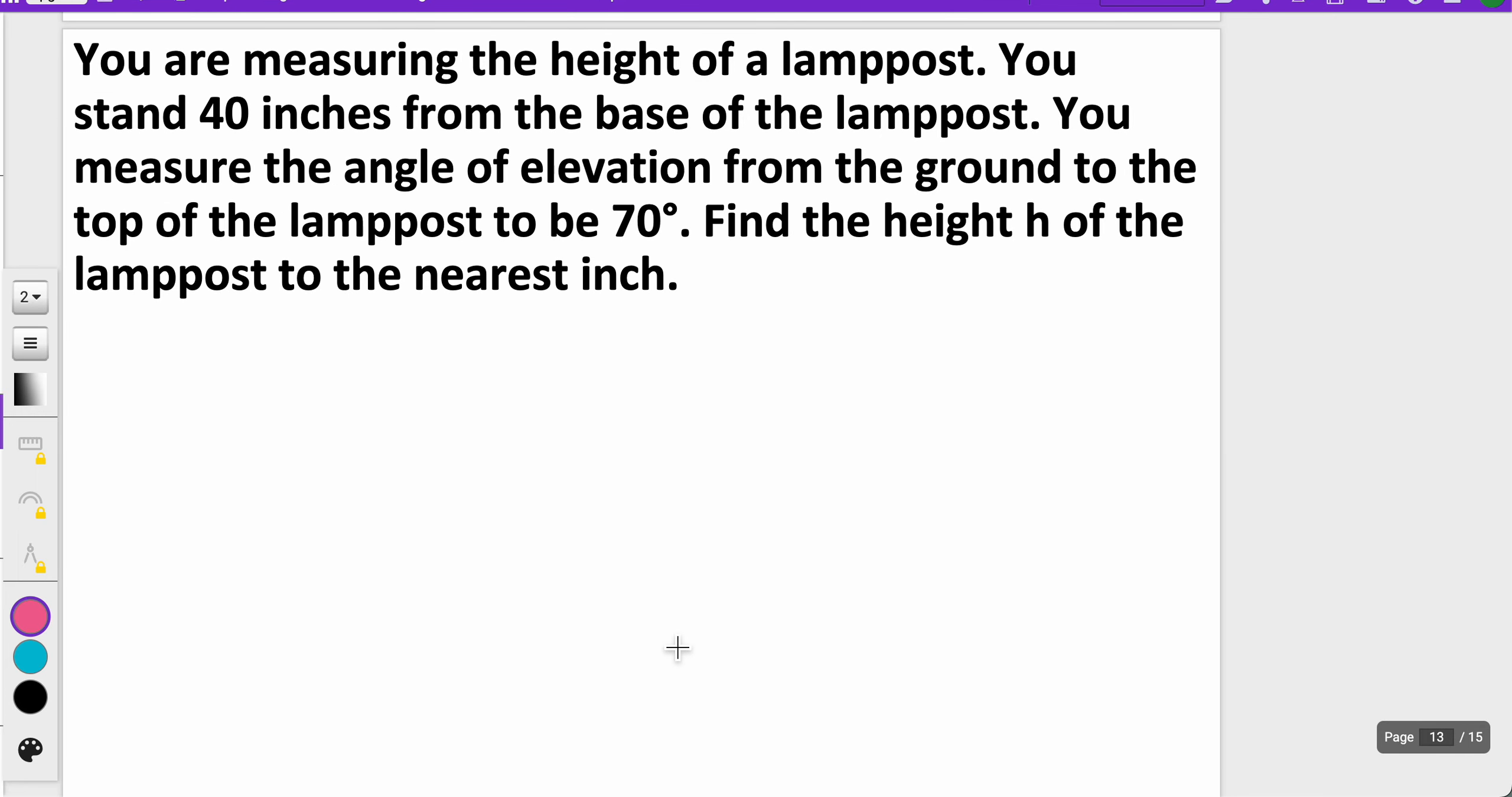You are measuring the height of a lamppost. You stand 40 inches from the base of the lamppost. You measure the angle of elevation from the ground, where I'm standing, to the top of the lamppost, and that is 70 degrees. Find the height, h, of the lamppost to the nearest inch.